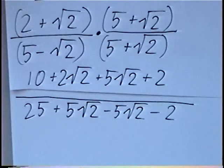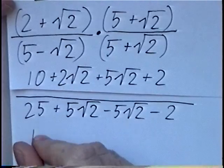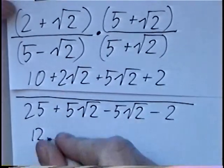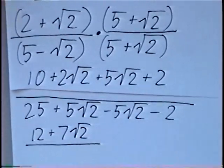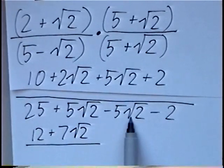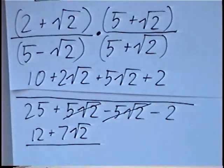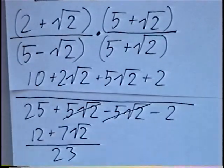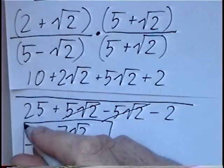Combining like terms: in the numerator, the integers 10 plus 2 give 12, and 2 radical 2 plus 5 radical 2 gives 7 radical 2. In the denominator, 5 radical 2 minus 5 radical 2 cancels, leaving 25 minus 2, which is 23. Our final answer is 12 plus 7 radical 2 over 23.